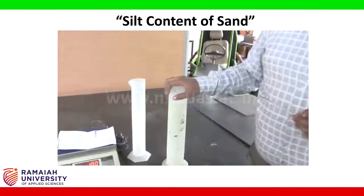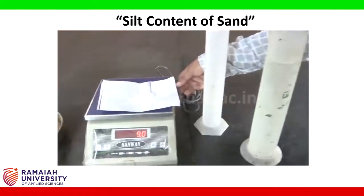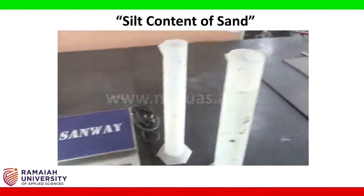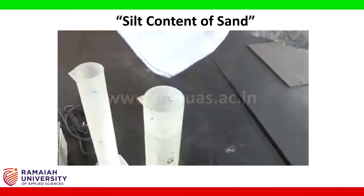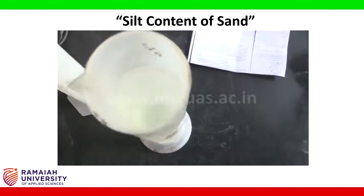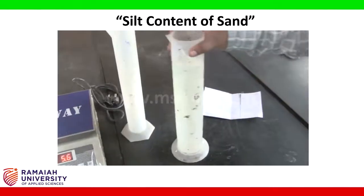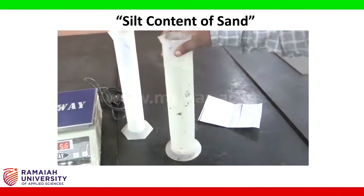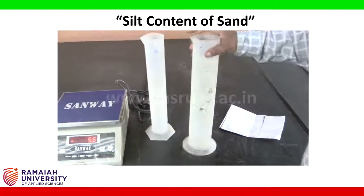Take one liter of water and add 10 grams of sodium salt into the water — it becomes a NaOH solution, a sodium hydroxide solution. We are going to mix it well until the salt is dissolved. After that, take an empty measuring jar.